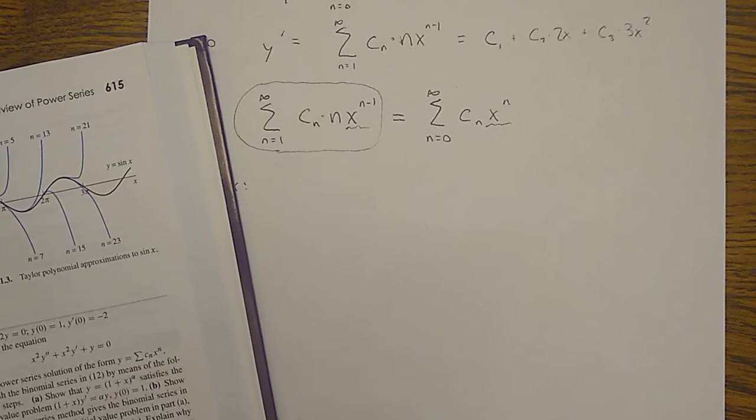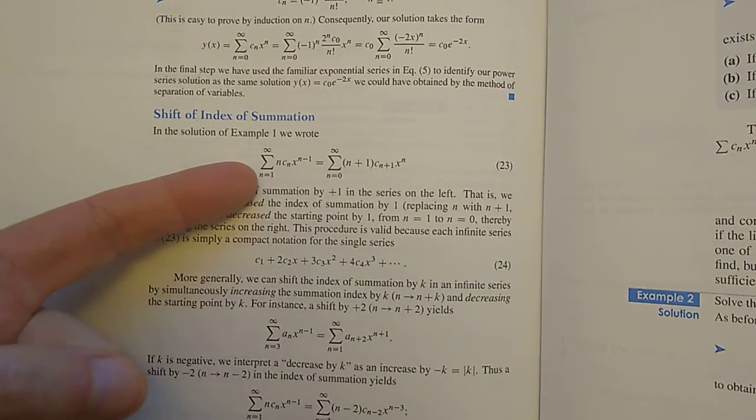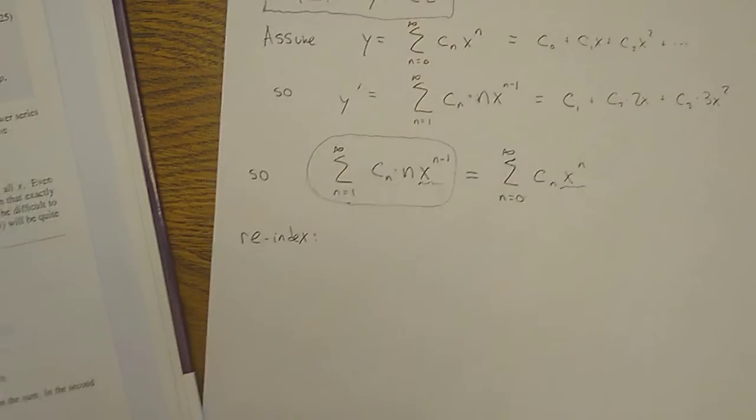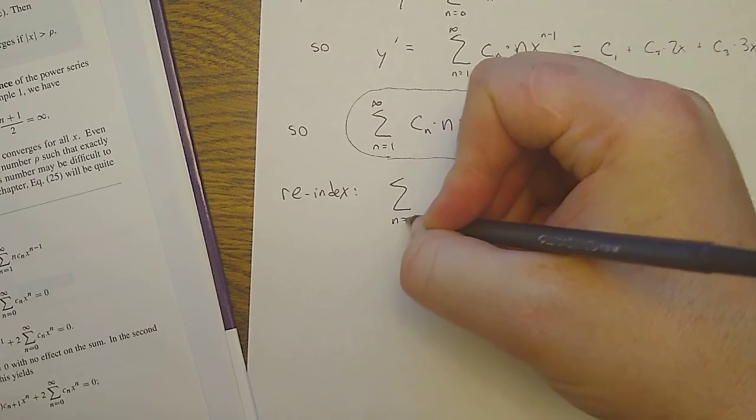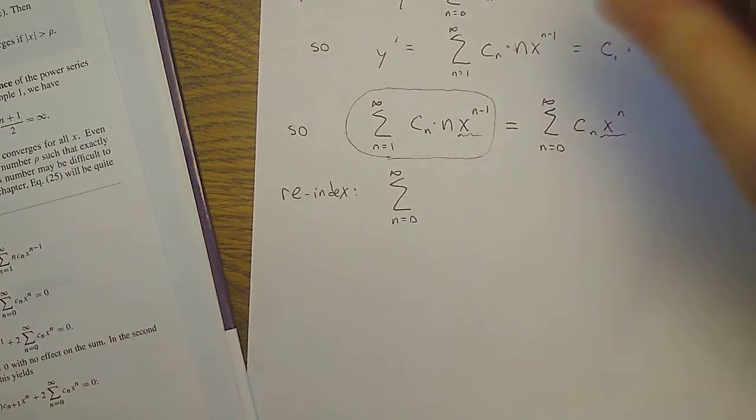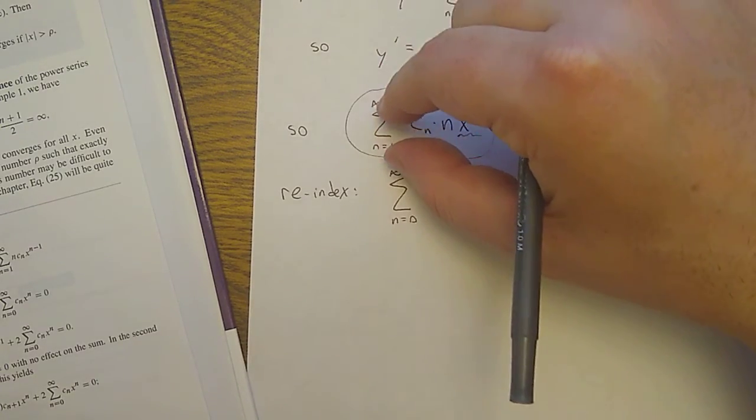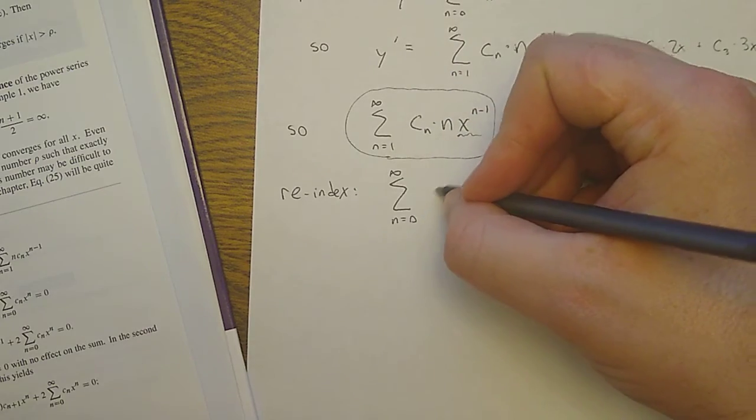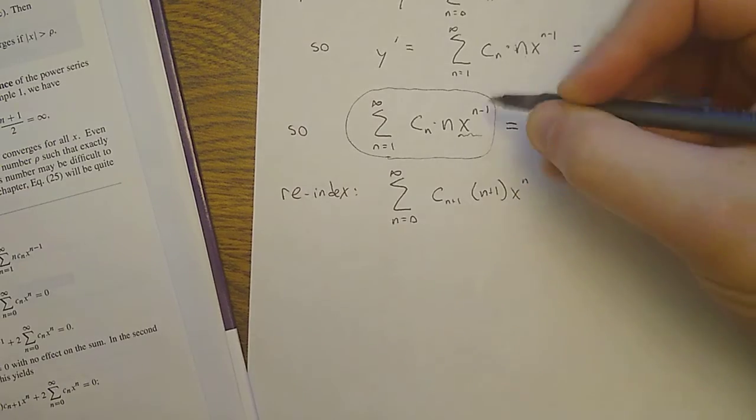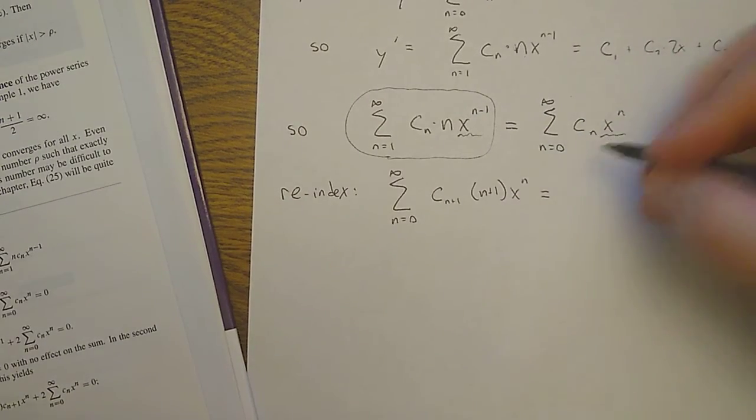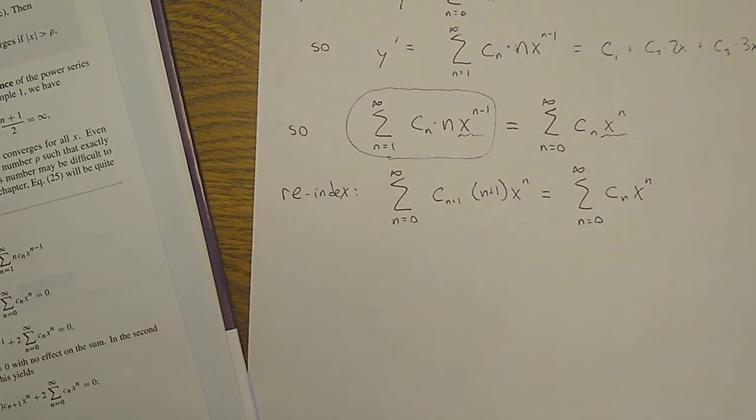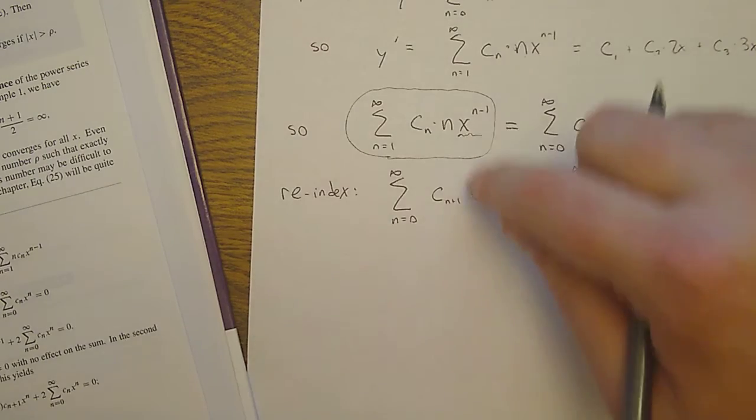What we can do here is equate coefficients, meaning the coefficient of a certain power of x here has to be the same as the coefficient of the same power of x here. But what I have now is not all that convenient, because I have x to the n on this side, x to the n minus 1 on this side. So here's what I'm going to do. I'm going to re-index, I'm just going to write this sum in a different way.